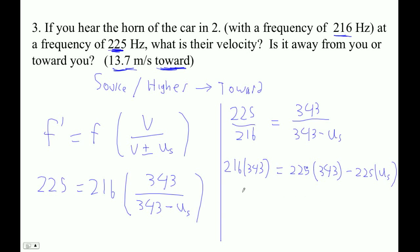Then we're going to go 216 times 343 minus 225 times 343, and divide by -225, and we'll get us.